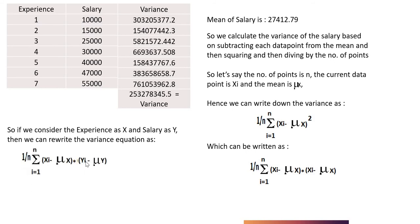This way, we rewrite it as (x_i minus mu_x) into (y_i minus mu_y). Based on this analogy, when we find out the differences of each data point from its individual mean — for x which is experience, the mean is the summation of 1 to 7 divided by 7, which is 28 over 7, which is 4. So each data point: 1 minus 4, then 2 minus 4, and so on. For y, it will be 10,000 minus 27,412 and 15,000 minus 27,412 and so on. We multiply them and find the value — whatever value we find out, that is called covariance.